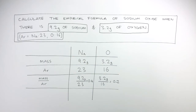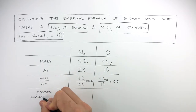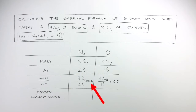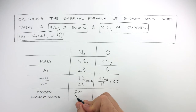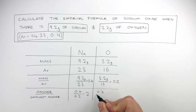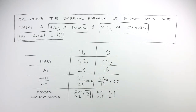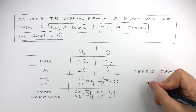In the fourth row, take your answer from the above calculation and divide it by the smallest number. We can see 0.4 is bigger than 0.2, so 0.2 is the smallest answer. For sodium, the answer is 0.4 divided by 0.2, which equals 2. For oxygen, the answer is 0.2 divided by 0.2, which equals 1. This shows the ratio of sodium atoms to oxygen atoms in the empirical formula. So the empirical formula is Na2O.